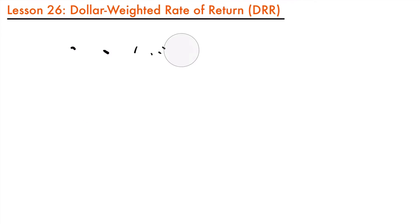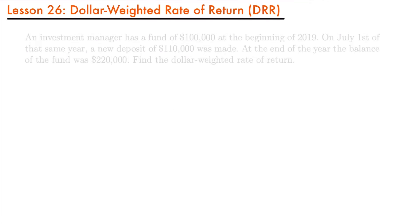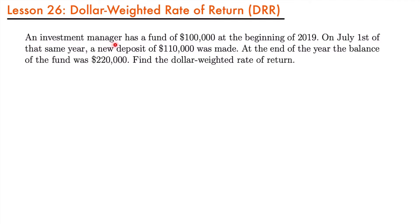Let's consider the following scenario. An investment manager has a fund of $100,000 at the beginning of 2019. On July 1st of that same year, a new deposit of $110,000 was made. And at the end of the year, the balance of the fund was $220,000. We want to find the dollar-weighted rate of return.